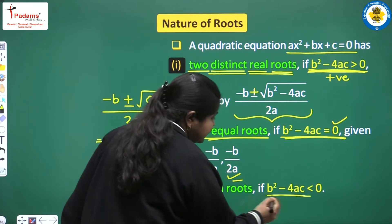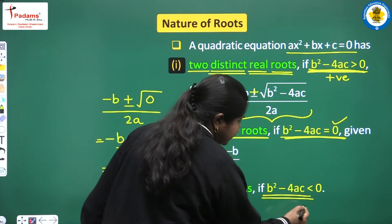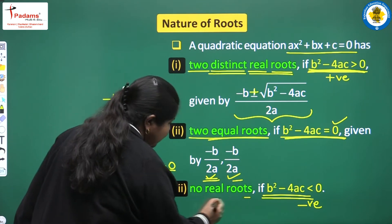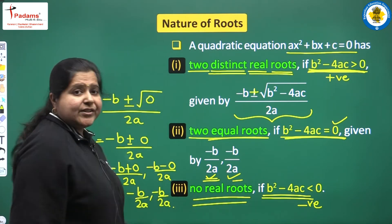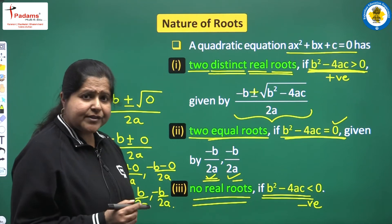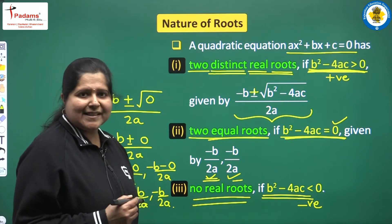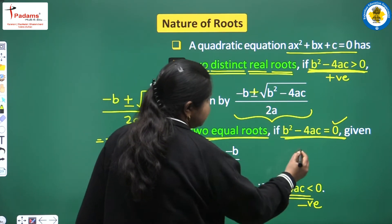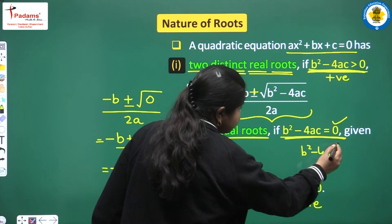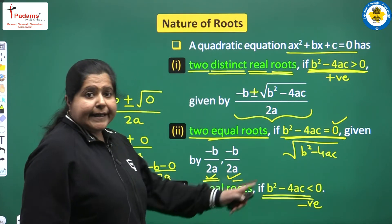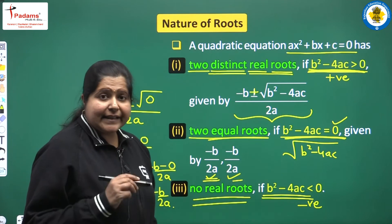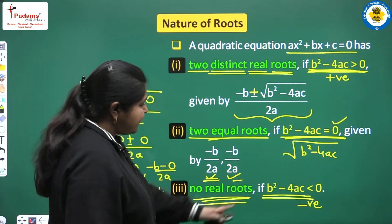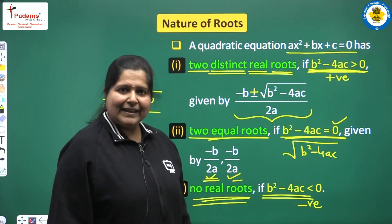If b² minus 4ac is less than 0 — meaning it is negative — then the equation will have no real roots. Equation ke real roots nahin honge; honge imaginary roots jo aap apni higher classes mein padhenge. Ye roots real nahin honge kyunki is expression mein b² minus 4ac square root ke under mein hai, aur negative value ka square root real nahin hota.